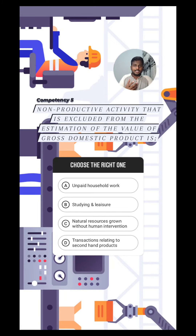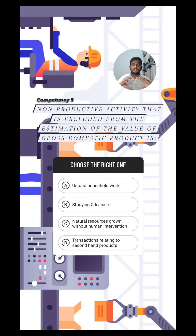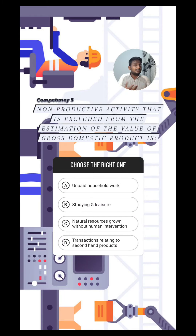For example, if you take Sri Lanka, the GDP of Sri Lanka will include all the products that are produced — all the value that is created within the geographical boundaries of Sri Lanka, maybe within a year. So that's what GDP of Sri Lanka is. In this GDP, any transaction that creates a value must be included. That's the idea.